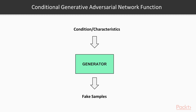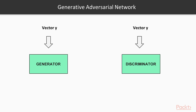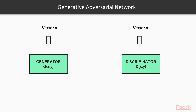In the Conditional GAN, the generator learns to generate a fake sample with a specific condition or characteristics rather than a generic sample from unknown noise distribution. To add such a condition to both the generator and discriminator, we simply feed some vector Y into both networks. Hence, both the discriminator D(X, Y) and generator G(Z, Y) are jointly conditioned on two variables: Z or X, and Y.